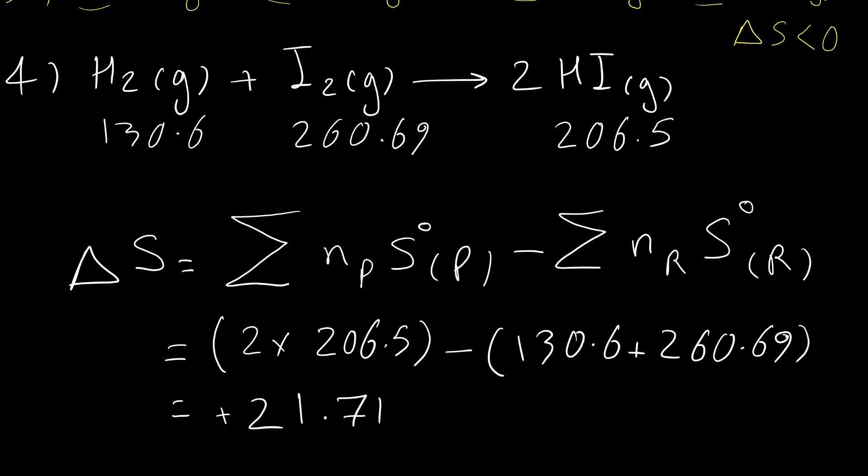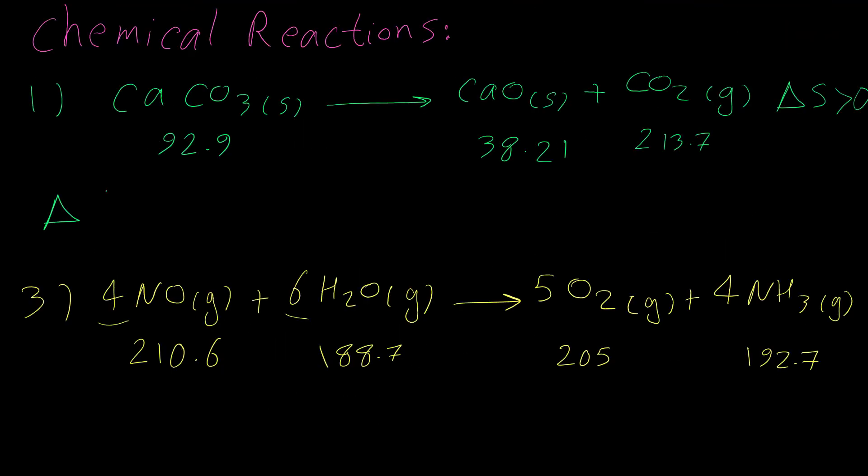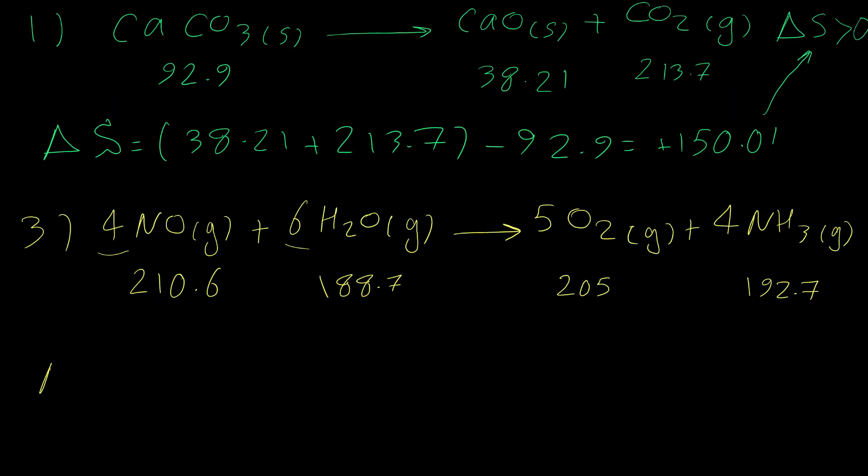21.71. For example one, delta S will be equal to sum total of products: 38.21 plus 2 times 213.7 minus reactants 92.9, and the answer will be 150.01. The calculation is matched with our prediction that it says delta S should be positive.